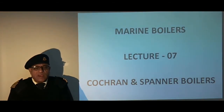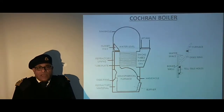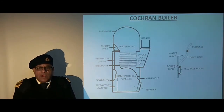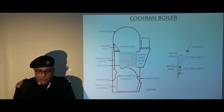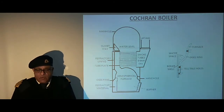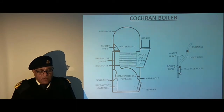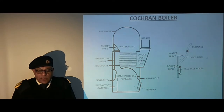In the following slides we will study the Cochrane boiler. This sketch shows the Cochrane boiler of an older design which had riveted construction. The boiler had a hemispherical furnace which was attached to the boiler shell with an OG ring. We can see here the construction of the OG ring connecting the boiler shell with the hemispherical furnace, and it has also got the enlarged details.